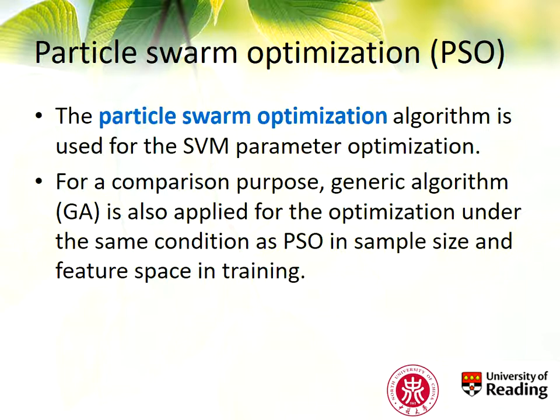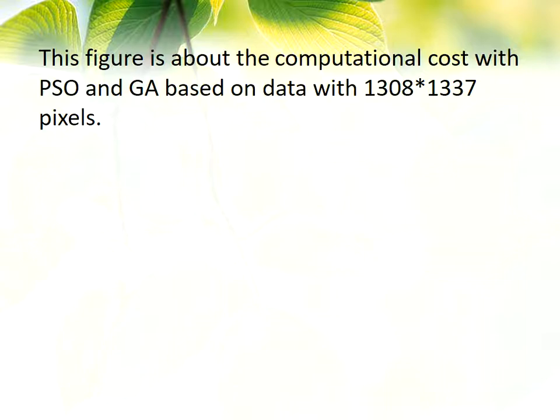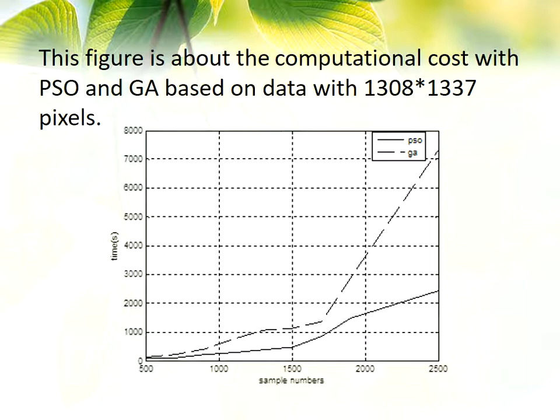We use the Particle Swarm Optimization Algorithm for parameter selection. For comparison purposes, we use PSO as well as genetic algorithm for the optimization. From this figure, you can see PSO compared to genetic algorithm will have much lower computational cost in selecting the optimal parameters for SVM, especially when the training sample increases to about 1,700. The GA gives a dramatic increase in computation time, but PSO still increases steadily.